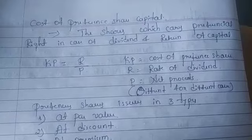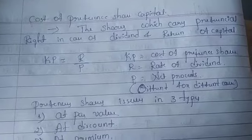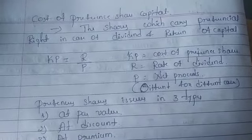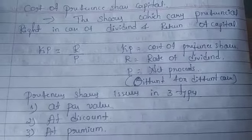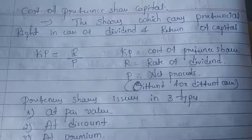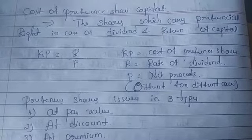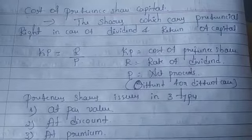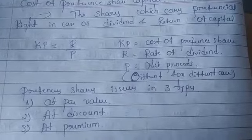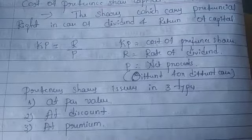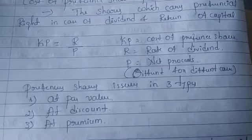There is a formula: kp equals r divided by p. Here kp means cost of preference shares, r is the rate of dividend, and p is the net proceeds. Net proceeds differs in different cases — in case of par value, in case of discount, and in case of premium.